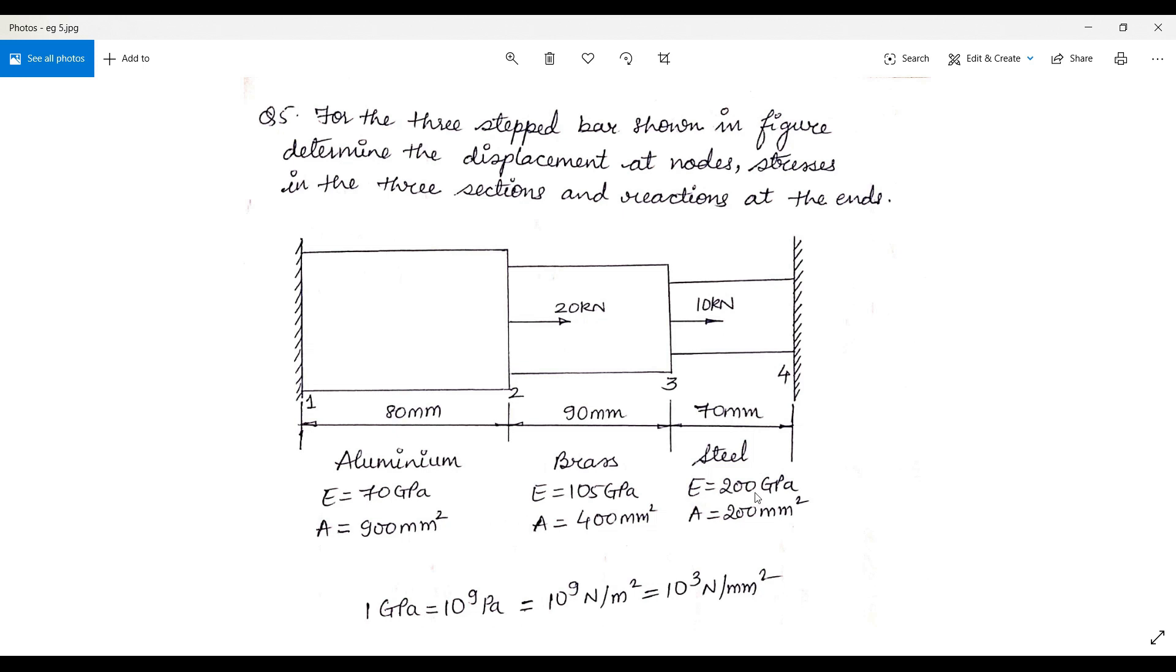The boundary conditions are given as both the ends are fixed and at the intermediate nodes, you can find the load of 20 kN and 10 kN. Since there are three step bars, I will have three elements.